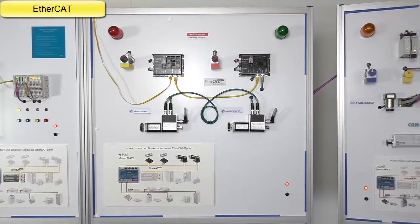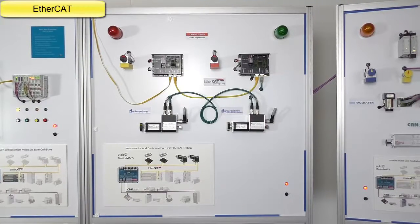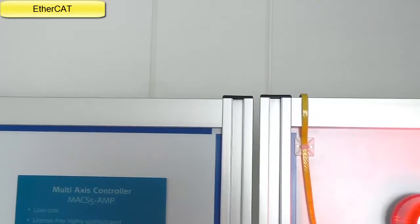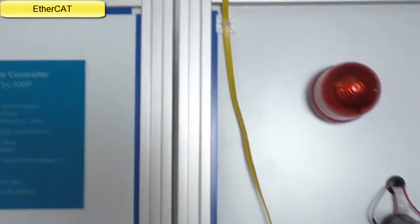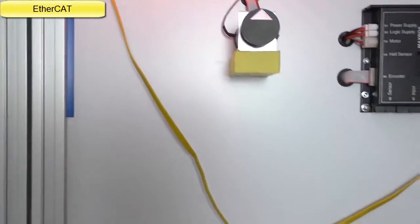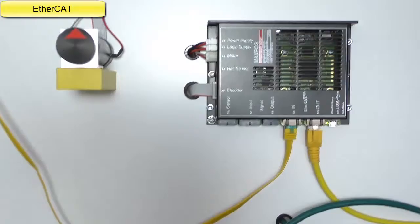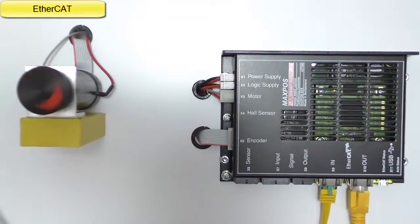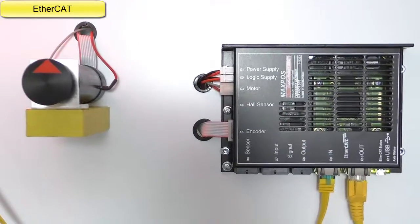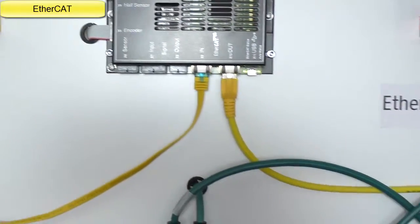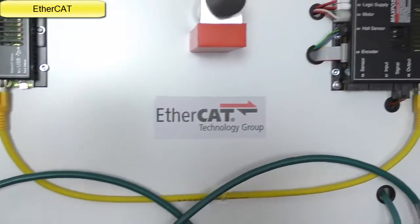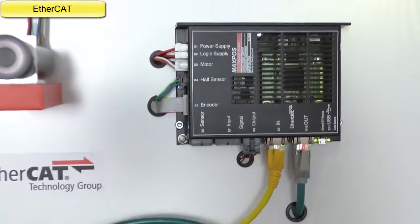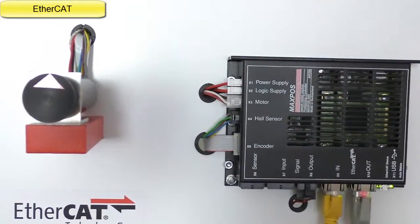From here we go over the whole way to panel number 3 where we can see two Maxon Maxpos amplifiers with motors connected. Here is the first one and here is the second one.